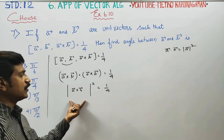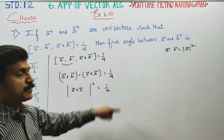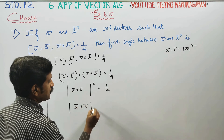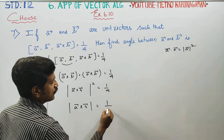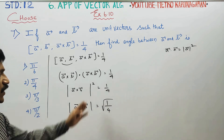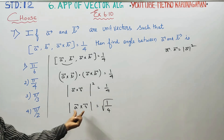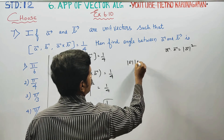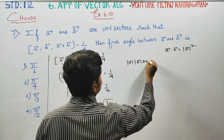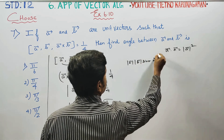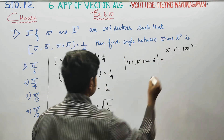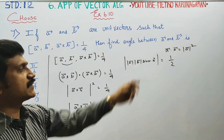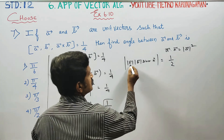Taking the magnitude as a positive value, the magnitude of (a cross b) equals the positive square root of 1 by 4, which is 1 by 2. Expanding using the cross product formula: magnitude of a cross b equals magnitude of a times magnitude of b times sin theta, into a unit vector.